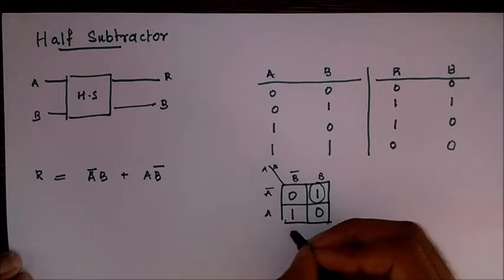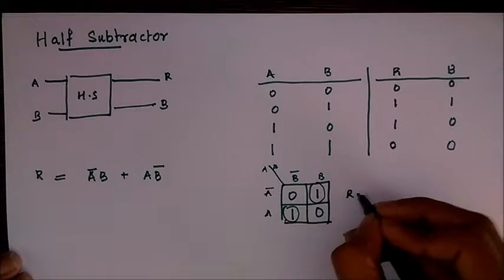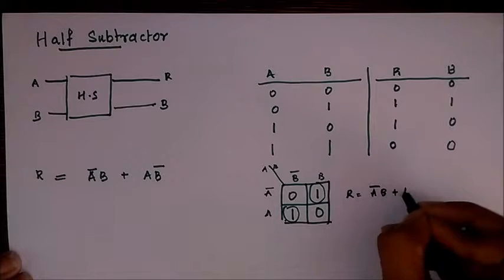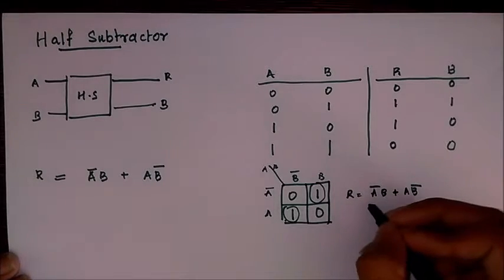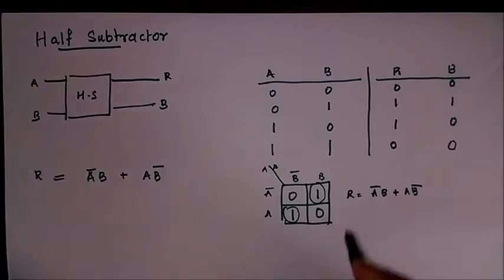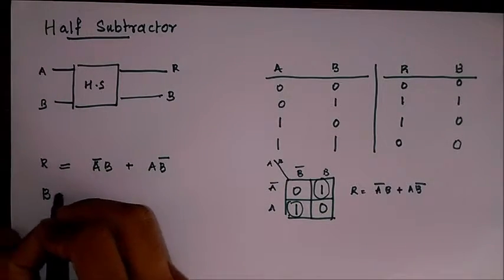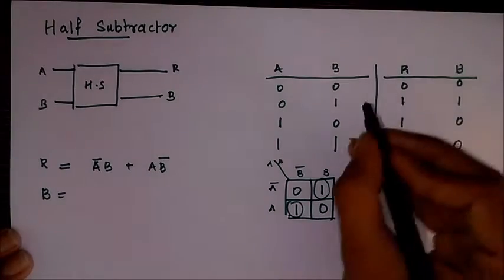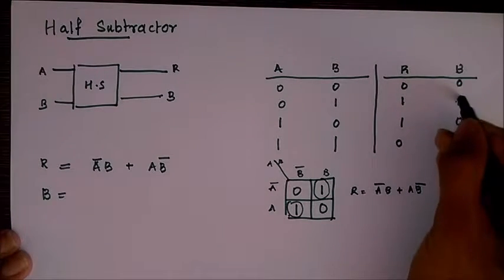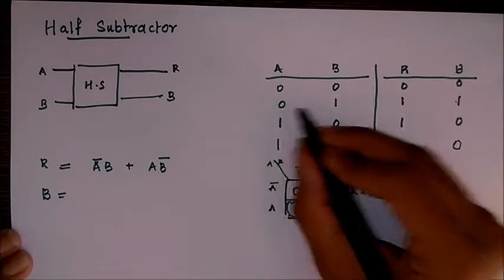For carry you can either use a K-map or write directly like this. So borrow, the borrow will be one only at this combination, so A̅B.